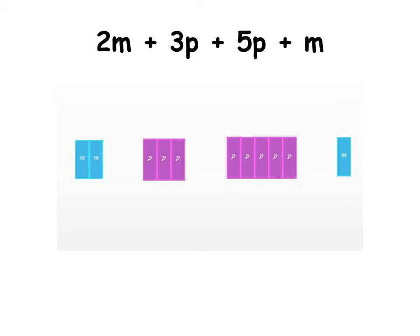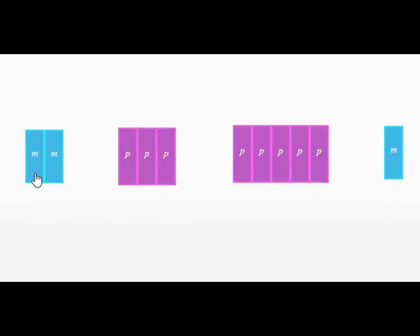So therefore, after grouping the M's with the M's, the 2M with the M, and after grouping the 3P with the 5P, and then we add, we will result with 3M plus 8P, since we're dealing with plus.